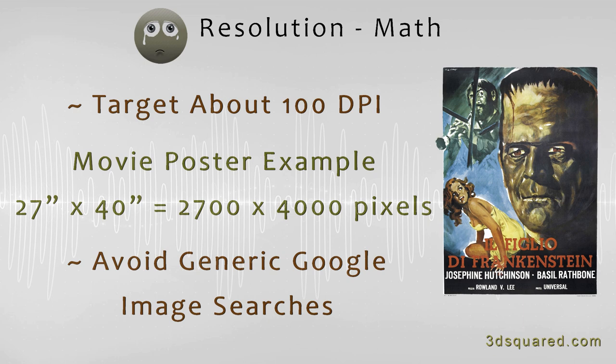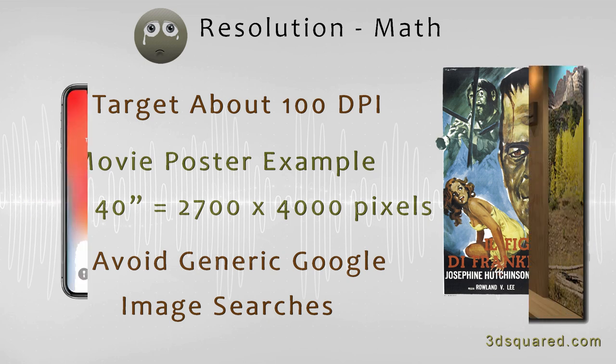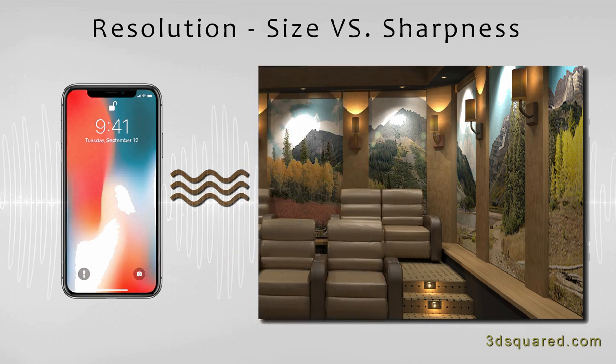Try to avoid doing generic image searches on Google — the images will be too small and will not effectively create a great reproduction. It should also be noted that just because a file is large doesn't necessarily mean that it's sharp. Images taken from cell phones may be pretty large these days, but they're very highly compressed and do not offer a sharp image that would make for a good reproduction.